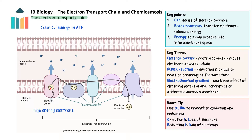As the electrons are passed from electron carrier to electron carrier down the electron transport chain, they release energy. This energy is used to actively pump protons — hydrogen ions — across the membrane into the intermembrane space, either the intermembrane space of the cristae or the thylakoids. The protons are pumped from the liquid part of the organelle: the matrix in mitochondria and the stroma in chloroplasts.